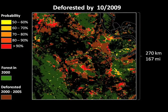Adding the latest FORMA data to this map, we see different colors from yellow to red, showing an increasing probability that a given square kilometer was deforested sometime from the end of 2005 to October 2009. More interestingly, because of FORMA's monthly updates, we can construct a dynamic illustration of the spread of deforestation across the region over four years.